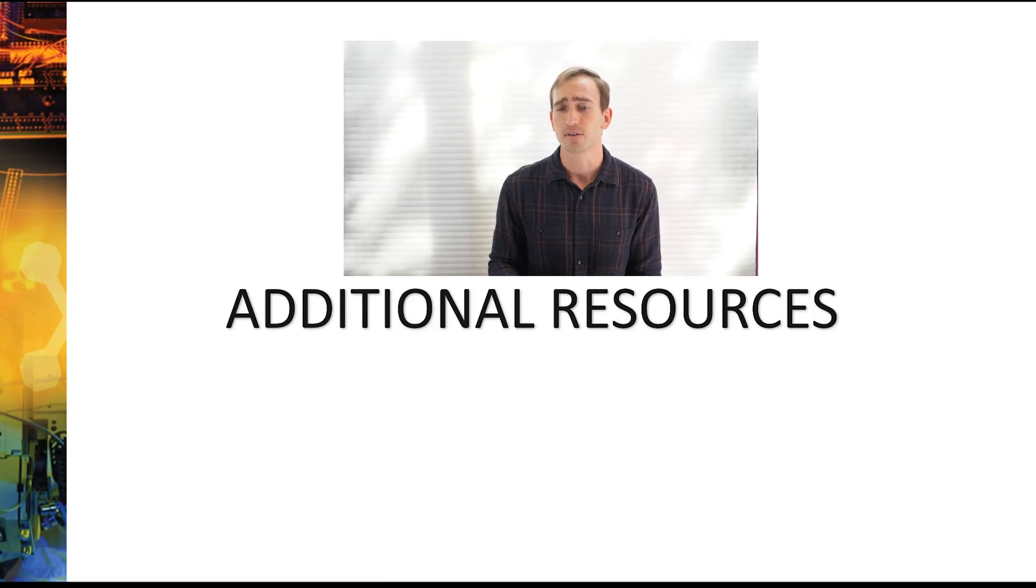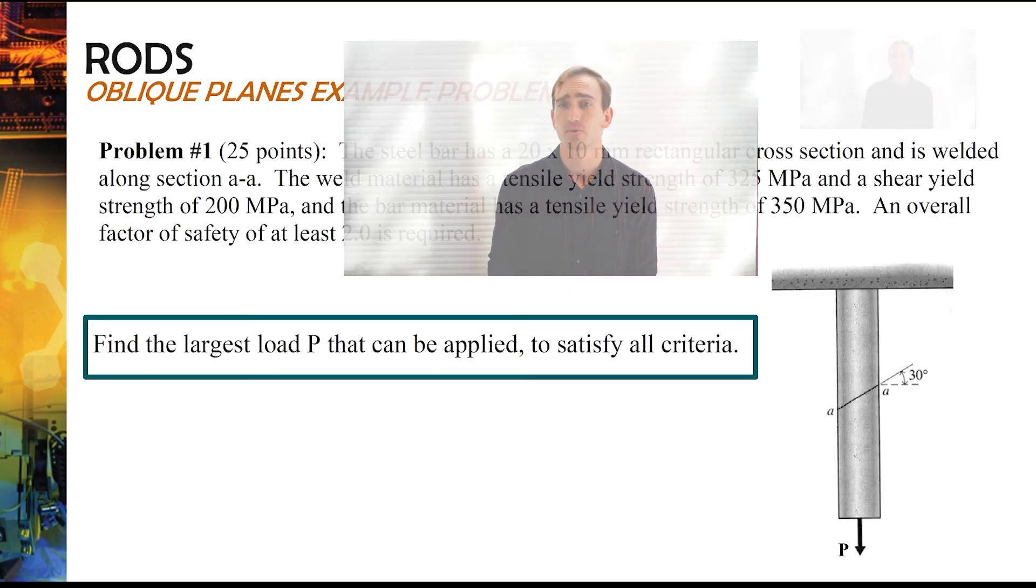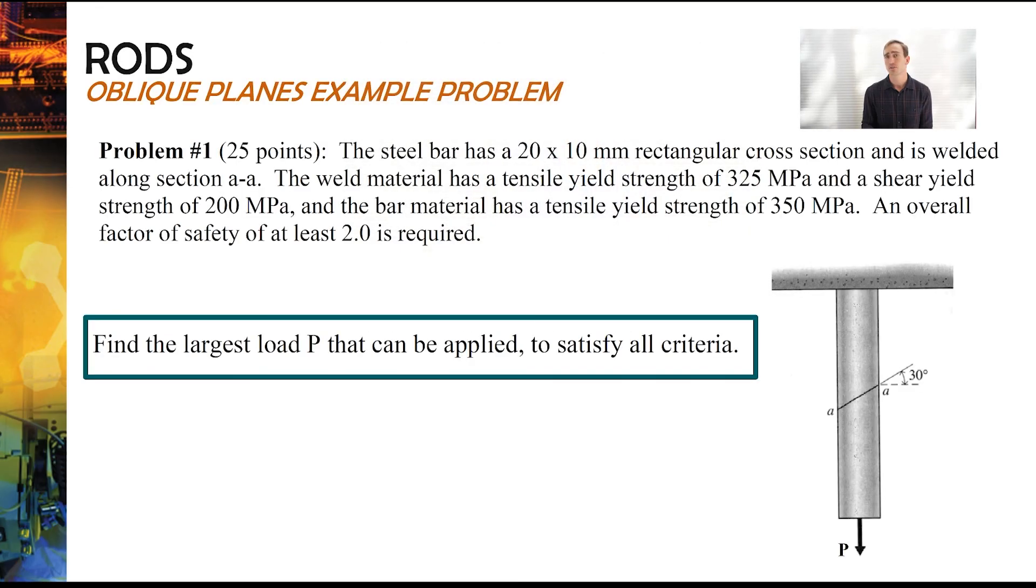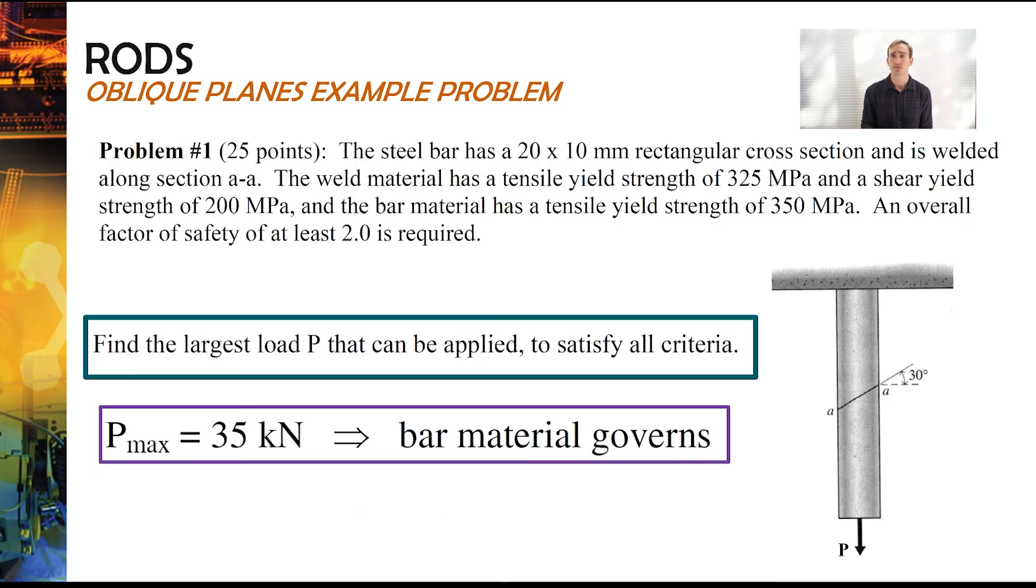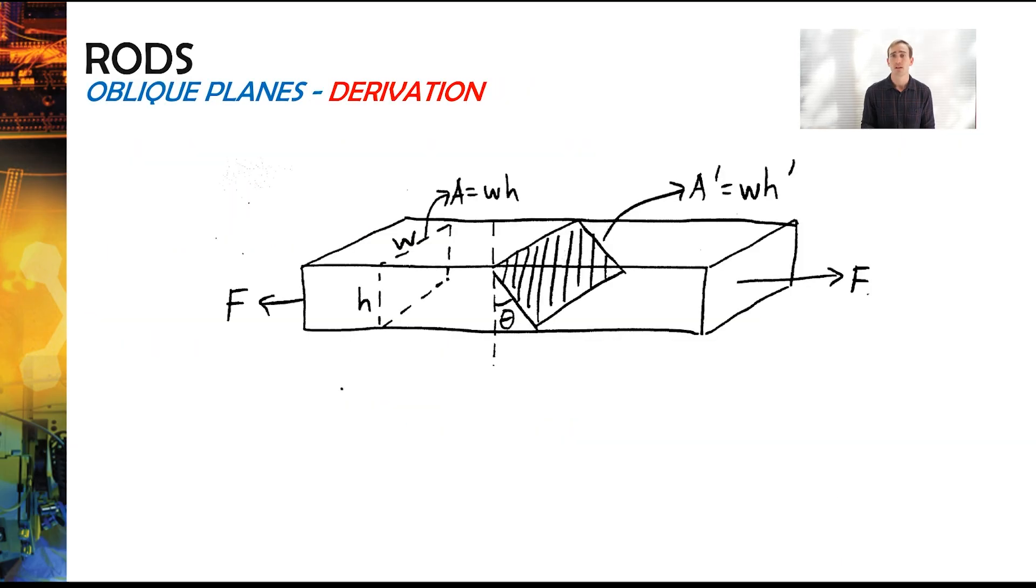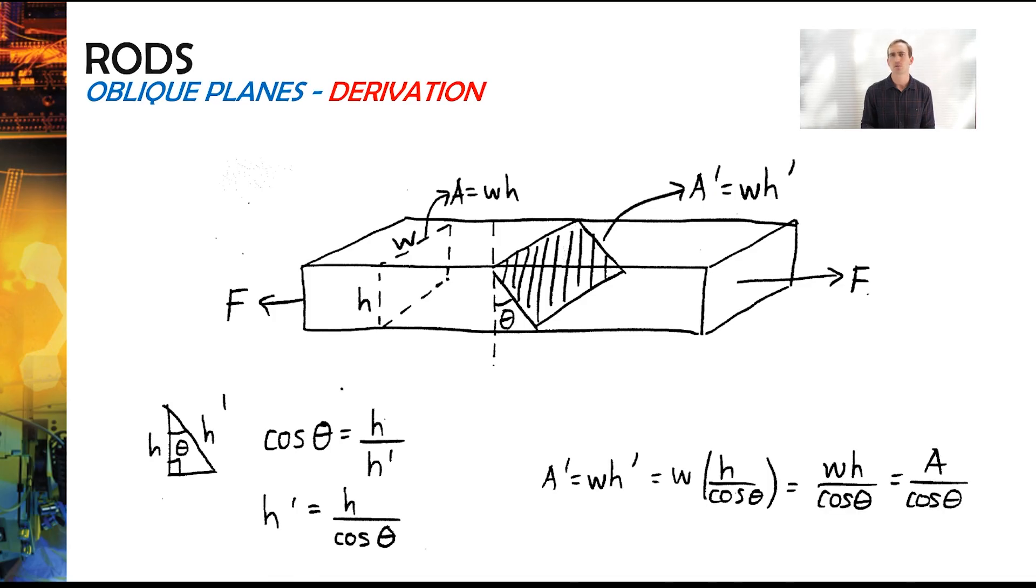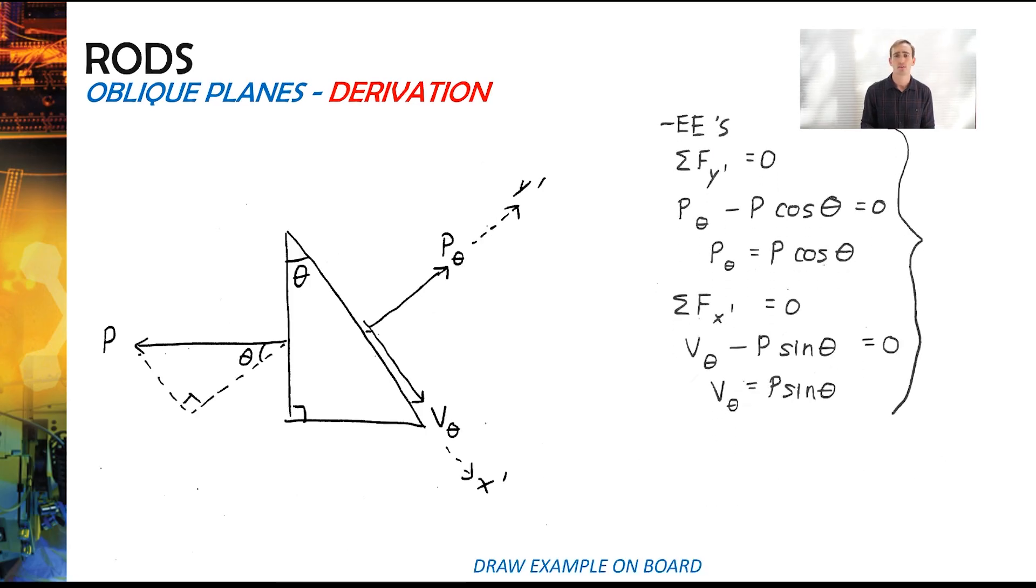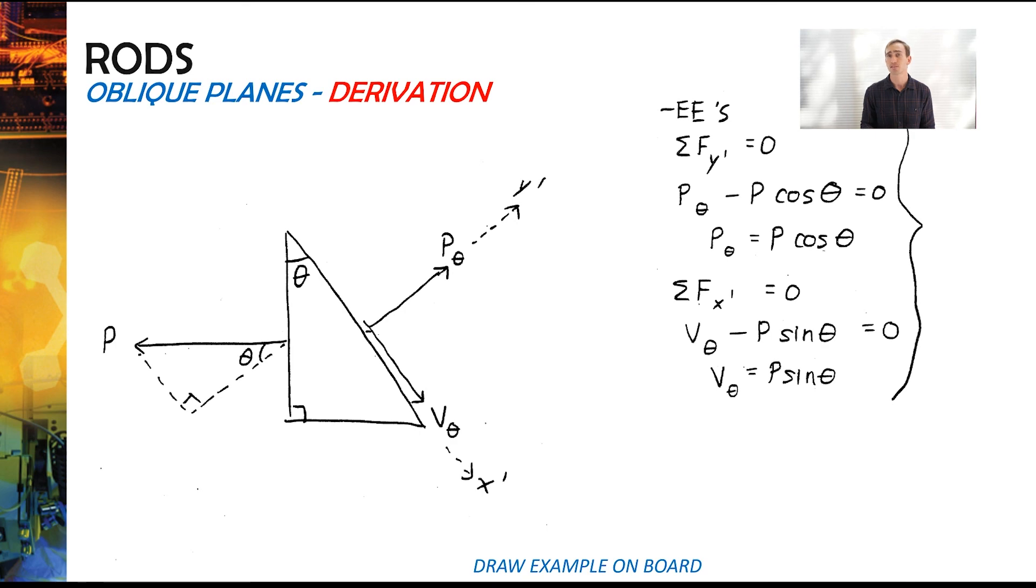You'll see at the end of this lecture I've included some additional resources. This includes an extra additional example problem where you can see you've got the solution numerically for it so you can check your work and see if you can apply the equations correctly. And there are also some different derivations of how we compute the shear stress and normal stress along a weld. You can feel free to take a look at this or not really worry yourself and just be happy with the equations that you've got.